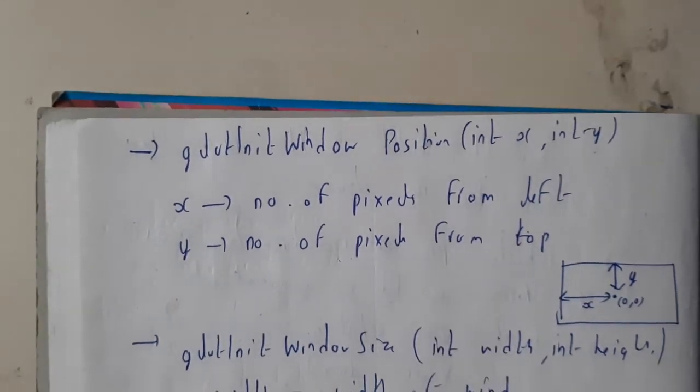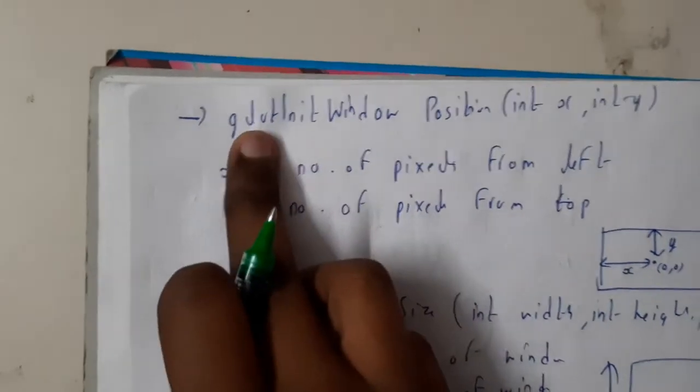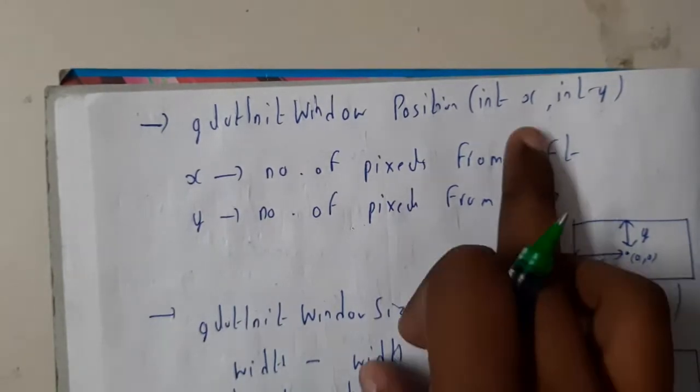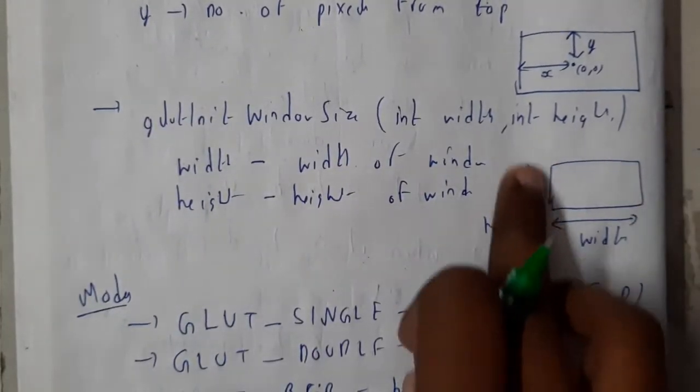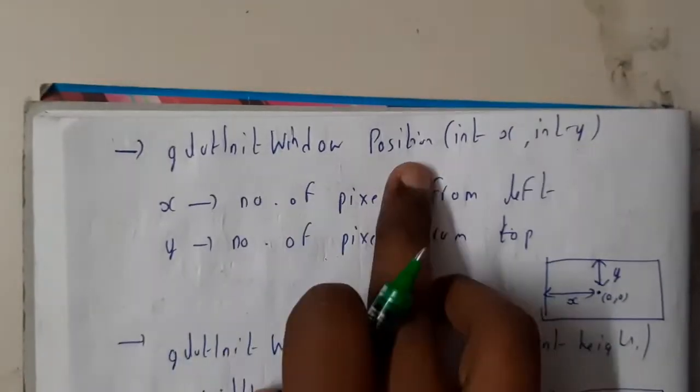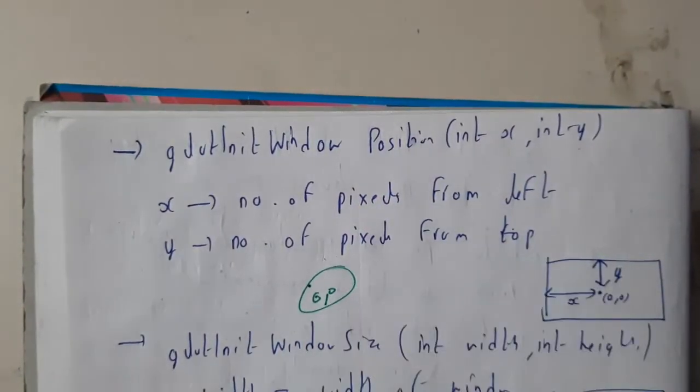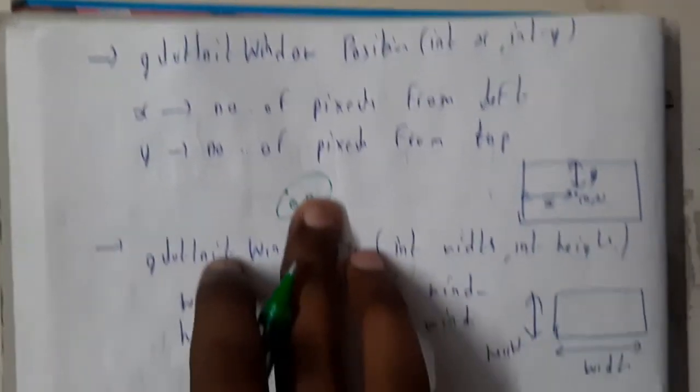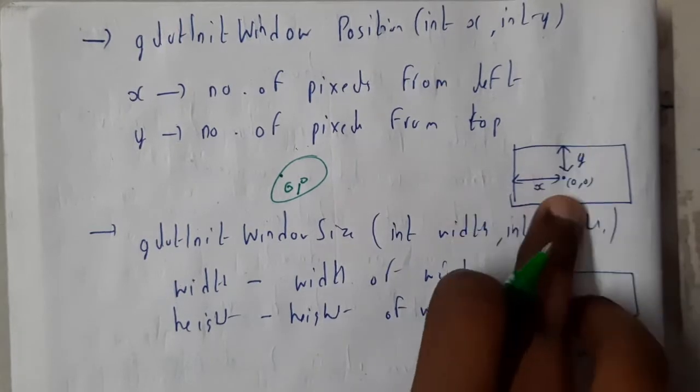Inside your main block of code, for creating and initializing the window, you will be using these functions. GLUT init window size is going to define the size of the window - this will be your width and this will be your height. Window position is the point where the origin, zero comma zero, is located. The distance from x will be moved this way and distance from y will be moved this way. This will be the point where your window position is.